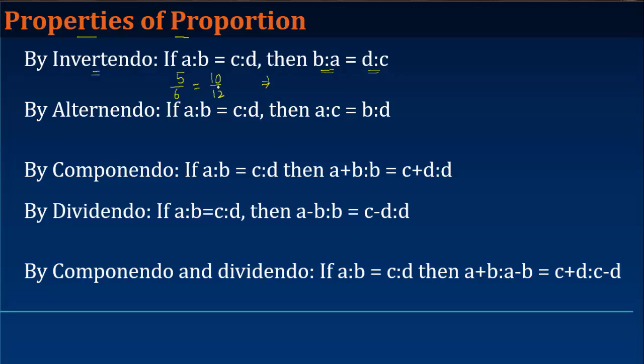Then what will be the value of b by a? b is this, a is this, which is 6 upon 5, right, is equal to d upon c. So you just revert this: 12 upon 10. Now incidentally, if you notice, if I just divide both these numbers by 2, I get 5 upon 6, which is equal to the left side. Similarly, if we divide this by 2, we get 6 upon 5, which is again equal to the left side. So this property holds true.